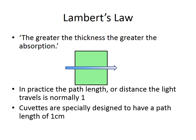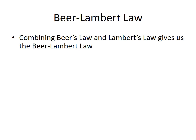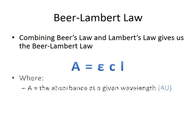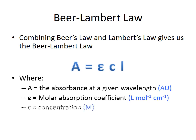In practice, the path length — the distance the light travels — is normally one centimeter, because the cuvettes used have a specially designed width of one centimeter. Combining these two laws gives you Beer-Lambert's Law, which states that A = εCL, where A is the absorption at a given wavelength, ε (epsilon) is the molar absorption coefficient, C is the concentration, and L is the path length.